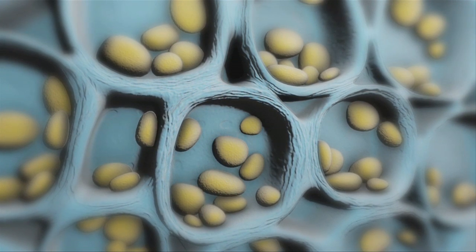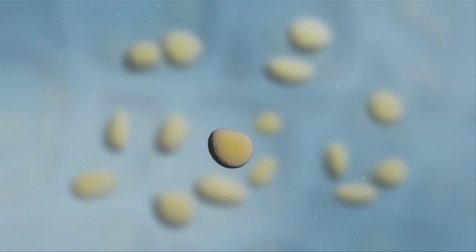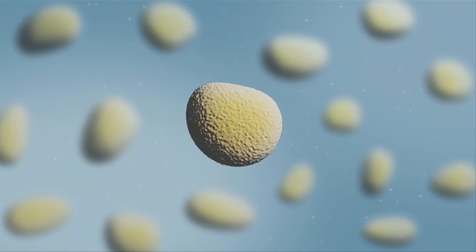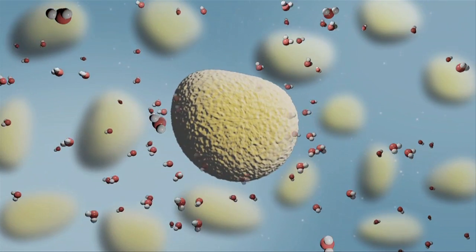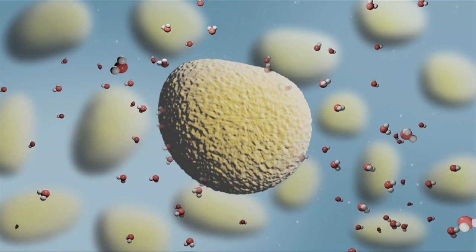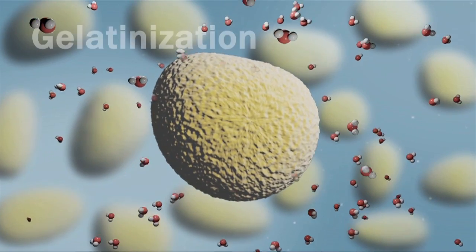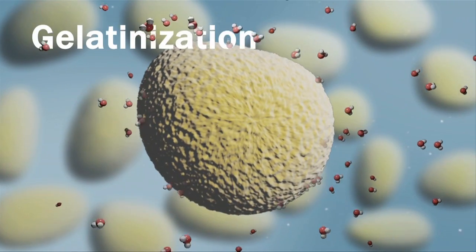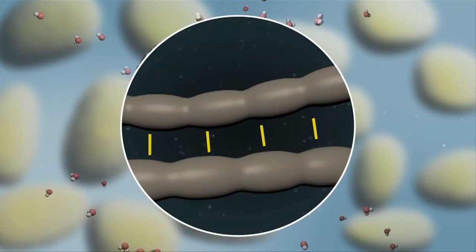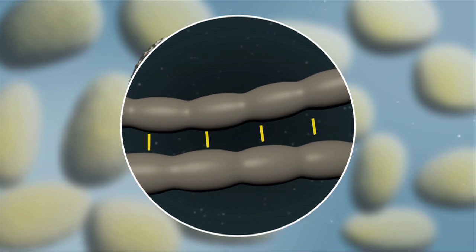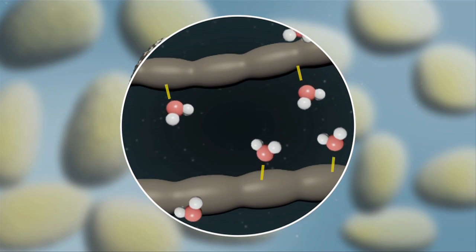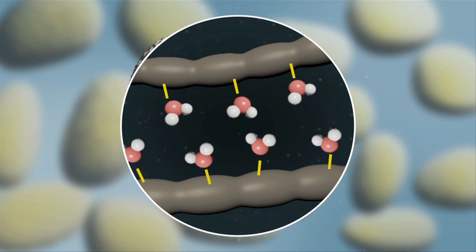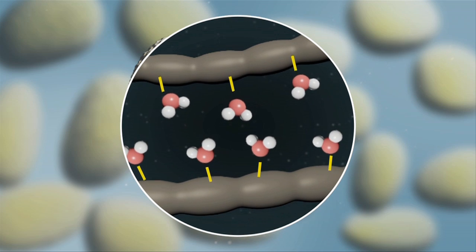When heated in the presence of water to about 80 degrees Celsius, the starch granules start to absorb water, inflating them to many times their original size. This process is called gelatinization. Hydrogen bonds originally between starch molecules in the granule break, and new hydrogen bonds form with the water that enters, separating the starch molecules and expanding the granule.